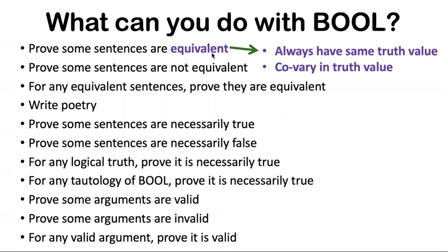Equivalence is one of the key concepts of the course. It just means two sentences have the same truth value. Whenever one is true, the other is true and vice versa. So they co-vary in truth value. And in this video, I'm going to focus on the ones that have to do with equivalence here. And in subsequent videos, we'll talk about some of the other groups, like necessarily true sentences or valid sentences.